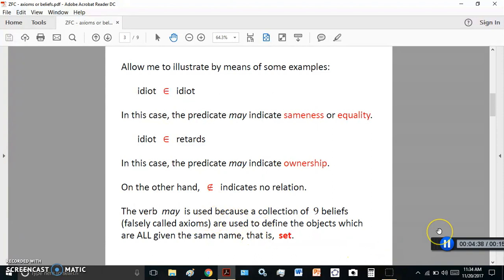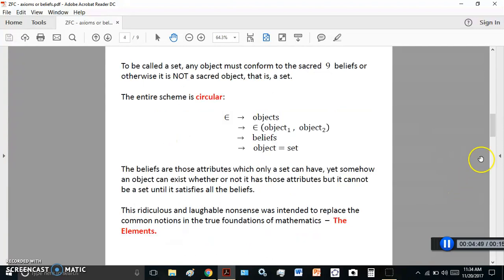So, the verb may is used because a collection of nine beliefs are used to define the objects that are all given the same name, which is set. So, to be called a set, any object must conform to the nine beliefs. Otherwise, it is not a sacred object, that is, a set. And here is a scheme, which is very circular. So, this relation operates on objects, as you see in this line here. And then, it is checked by the number of beliefs which actually use the relationship operator. So, again, circularity in between all of these. And then, finally, some kind of conclusion that the object is the set.